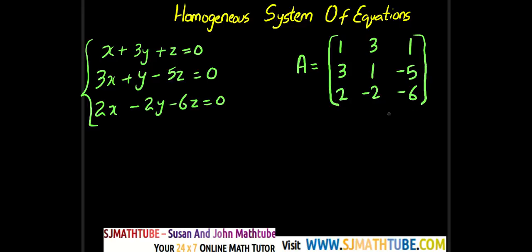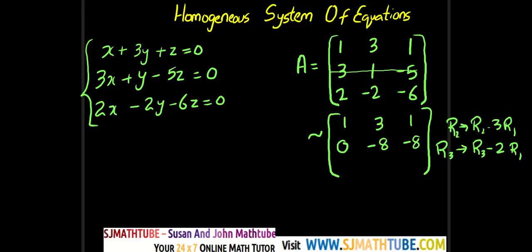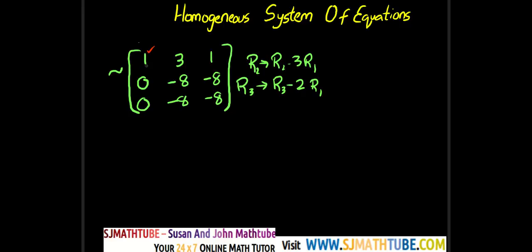I'm not going to write the augmented matrix. I'm going to find the rank right away. The operations are: R2 changes to R2 minus 3R1, and R3 changes to R3 minus 2R1. The second and third rows will change; the first row stays the same. The second row becomes [0, 1−9, −5−3] = [0, −8, −8]. The third row becomes [0, −2−6, −6−2] = [0, −8, −8].